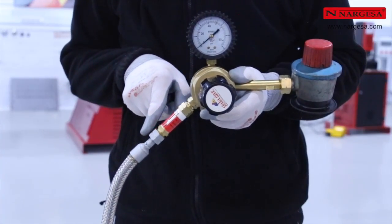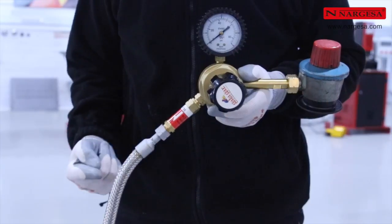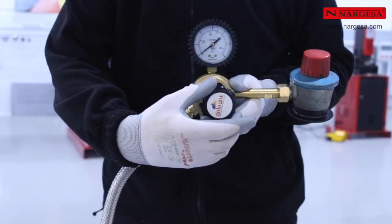Une vanne anti-retour de sécurité règle la direction du flux de gaz, évitant que la flamme reflue vers la bonbonne.